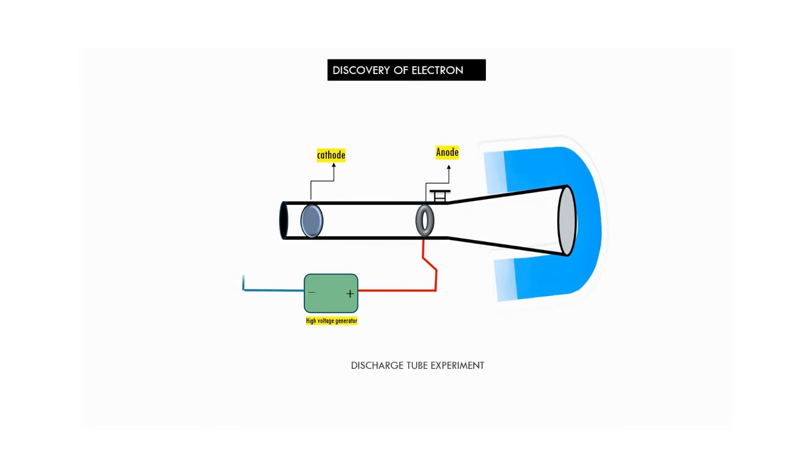Thompson went on and did another experiment to prove that cathode rays contain electrical charge. He placed a magnet and saw that cathode rays were deflected in another direction.